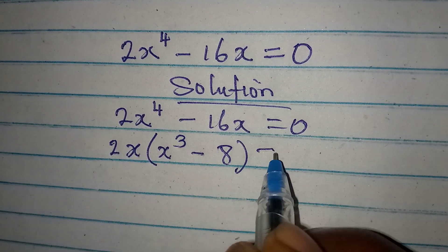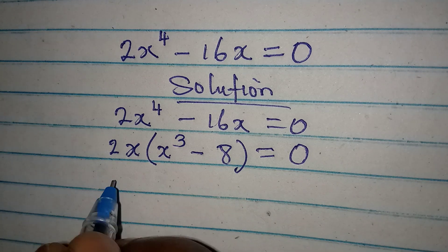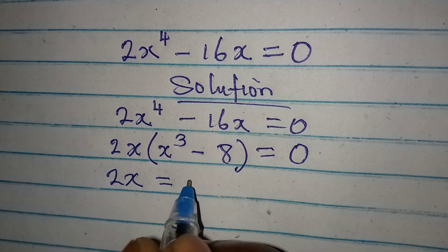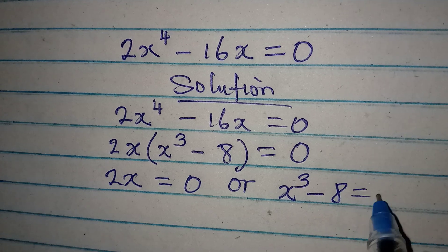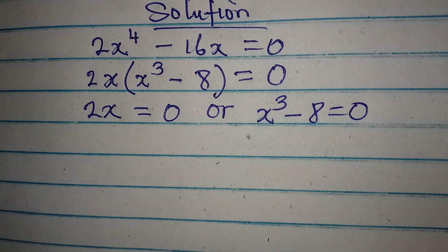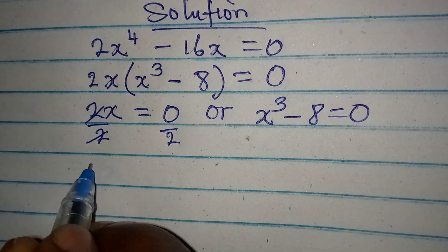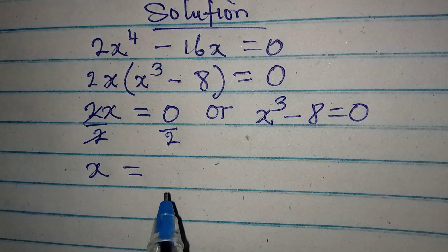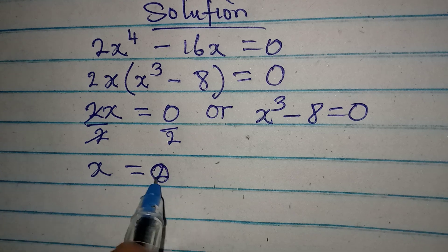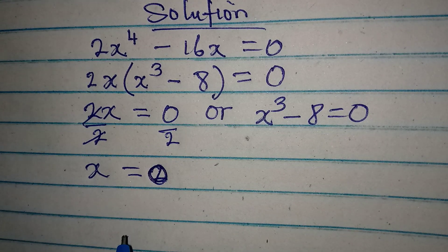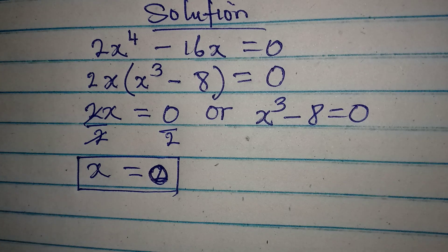This is equal to 0. From here we apply the zero product rule, so 2x is either equal to 0, or x to the power of 3 minus 8 is equal to 0. Dividing the first part by 2, x equals 0 divided by 2, which is 0. So our first value of x is 0.